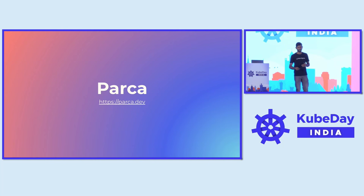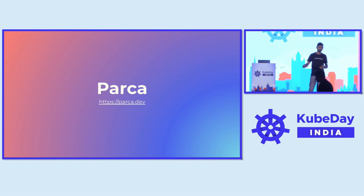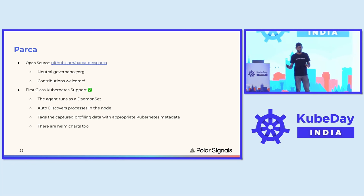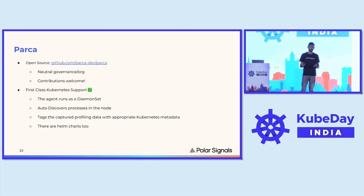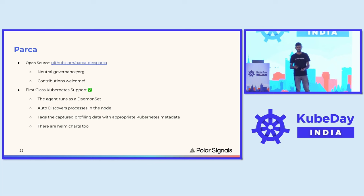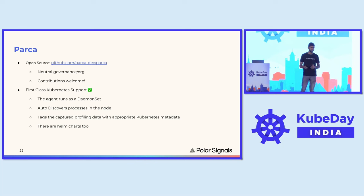So how do you tap into these benefits? Parca is our answer. Parca is an open source continuous profiler developed by Polar Signals, and it easily integrates with Kubernetes environments. It runs an agent to collect profiles, deployed as a DaemonSet. It's an eBPF-based, zero-instrumentation profiler, so it doesn't need any code changes to your application. You just deploy the agent as a DaemonSet and it starts working — it discovers every process running on the node, attaches profilers to all of them, and collects samples. It also indexes the collected profiles with Kubernetes metadata like label values, so later you can query for the exact key-value pairs you need and extract data for those workloads.